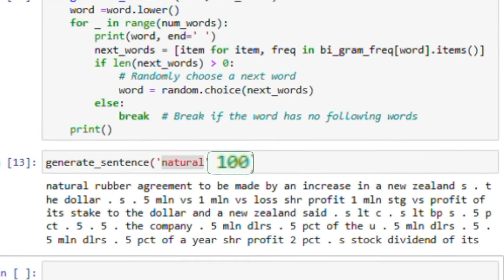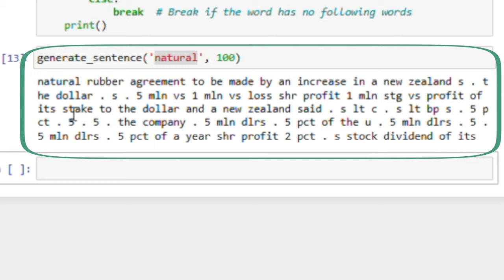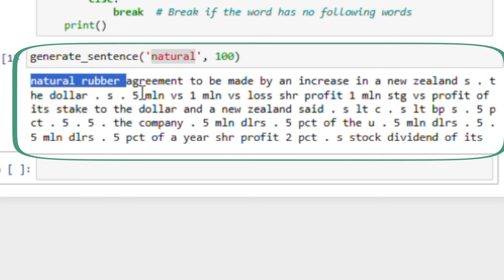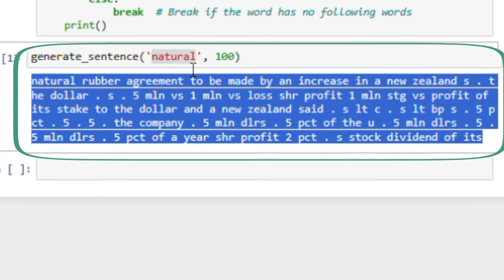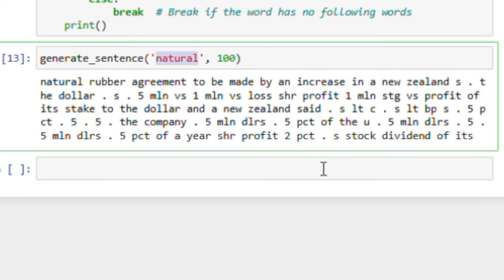We are asking for 100 words. And there you have it. Let us read the generated text. Natural rubber agreement to be made by an increase in a New Zealand's full stop the dollar. That reads really funny.